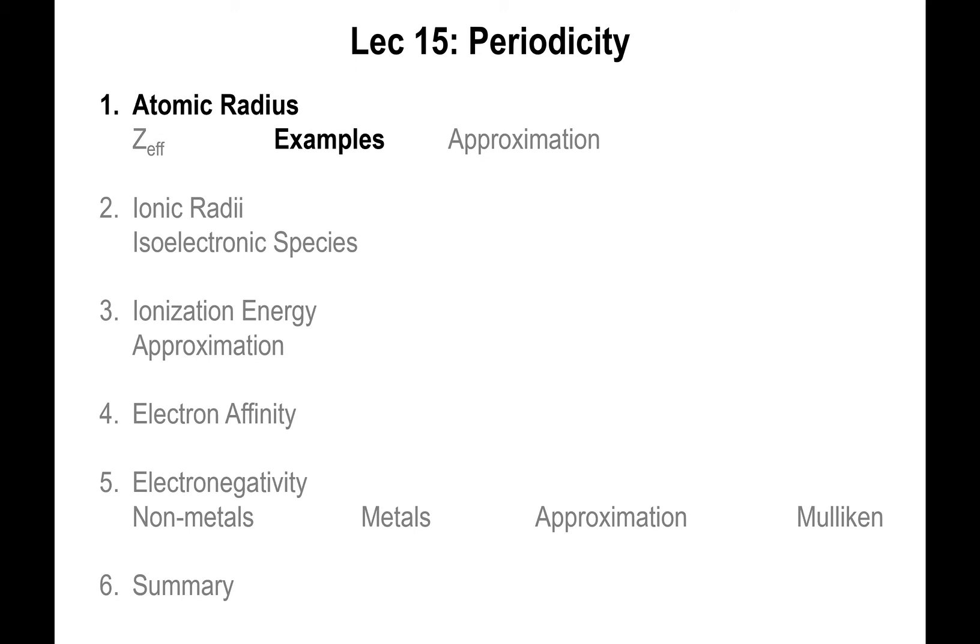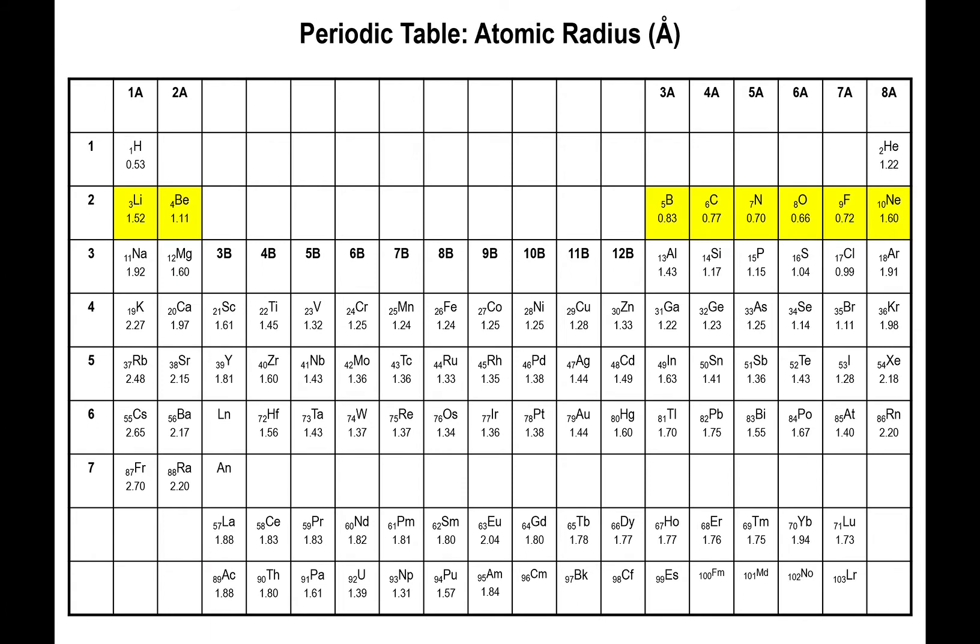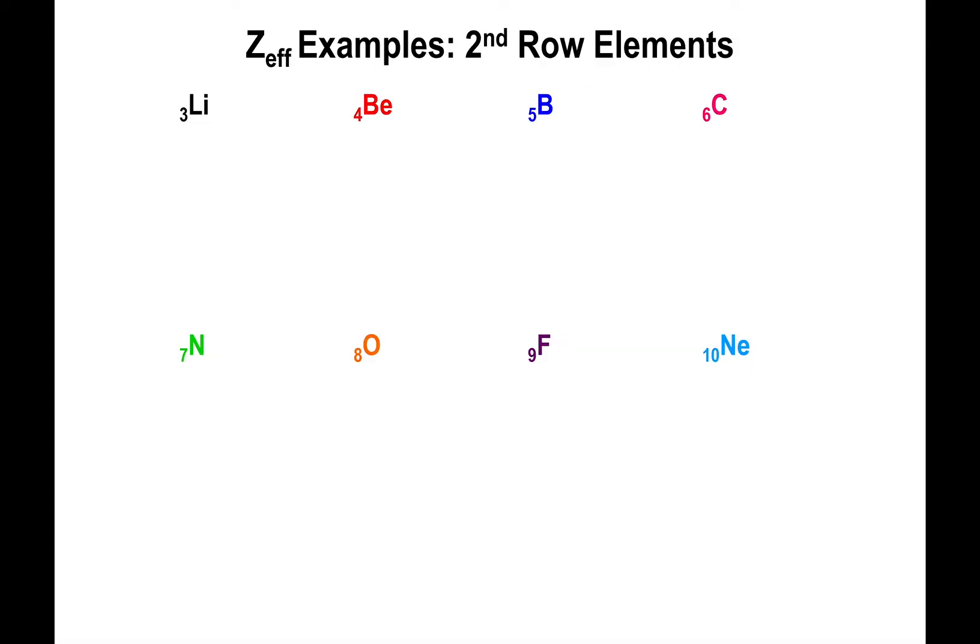Let's do some examples involving Slater's rules and the atomic size of the element. Keep in mind that as the effective nuclear charge goes up, the size of the element goes down. We're going to investigate the second row, starting from lithium with atomic number 3 going all the way to neon with atomic number 10.